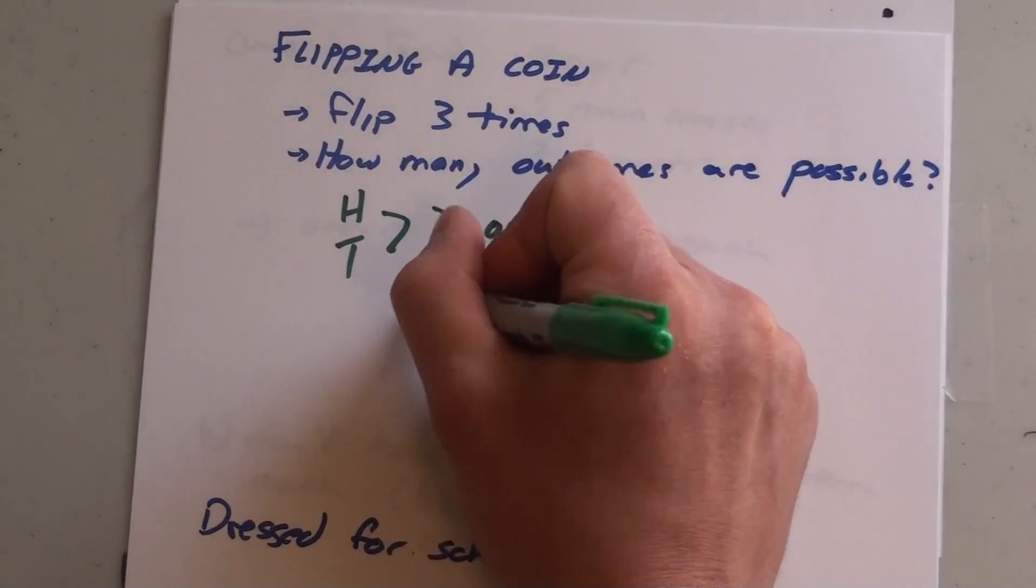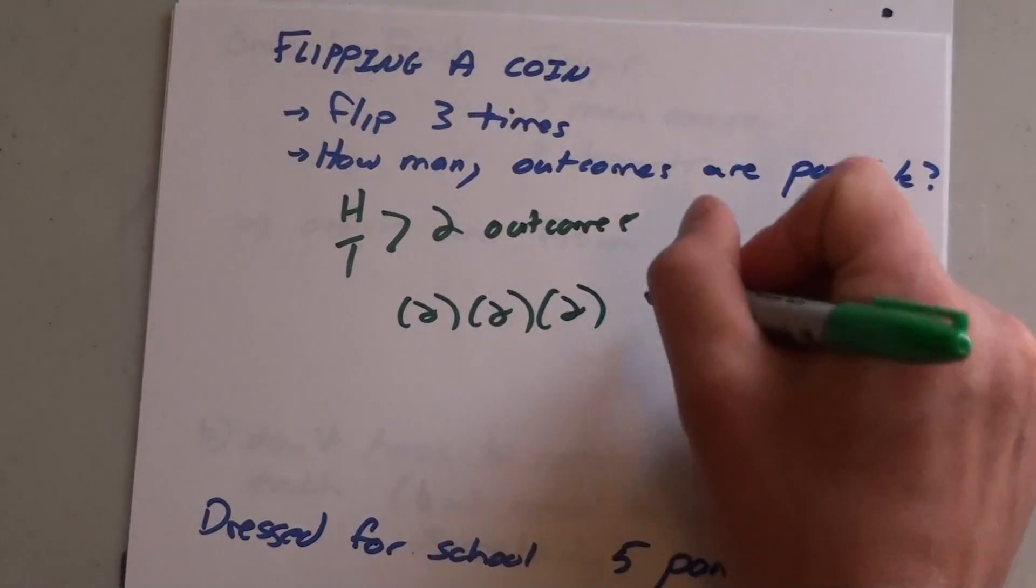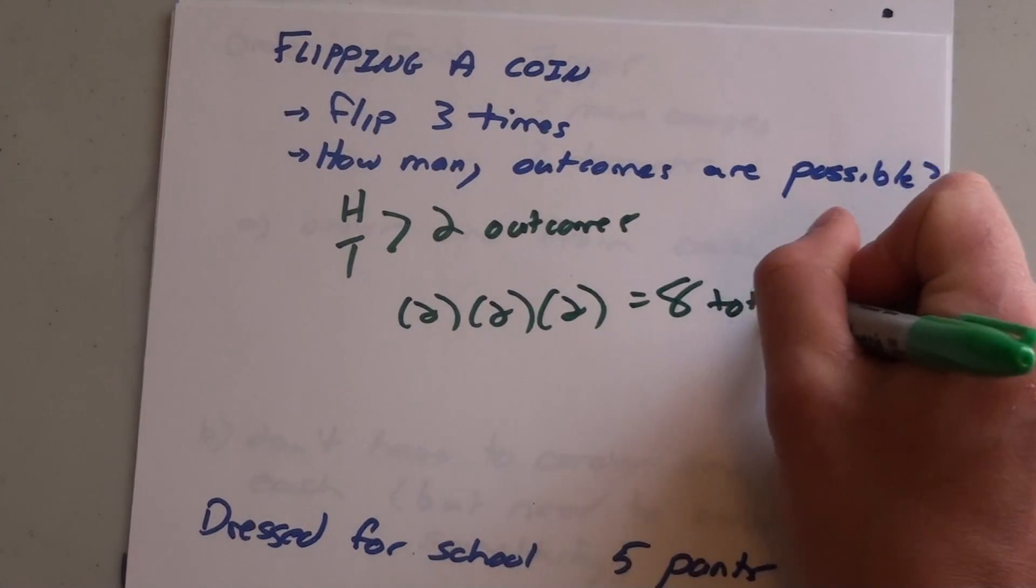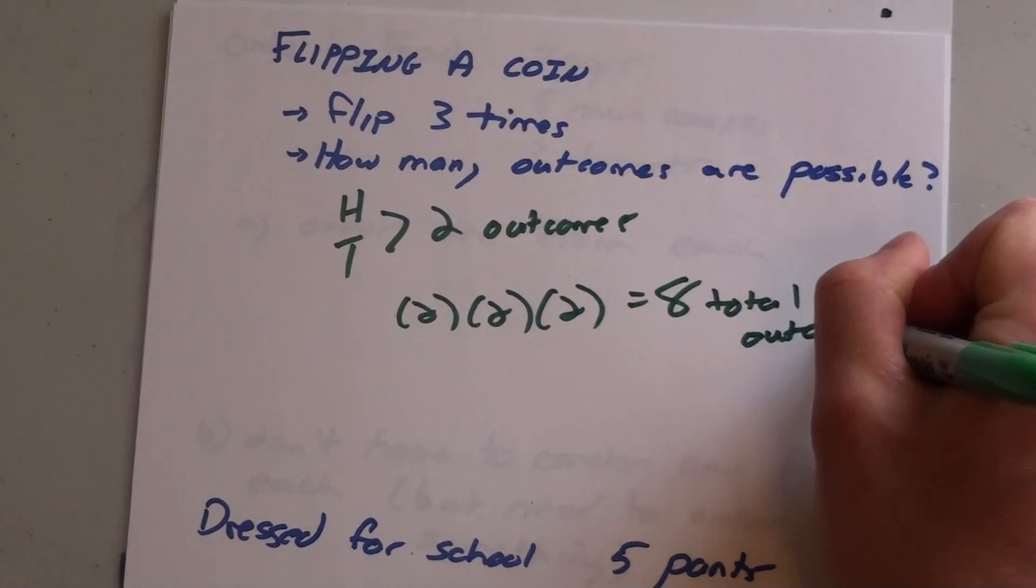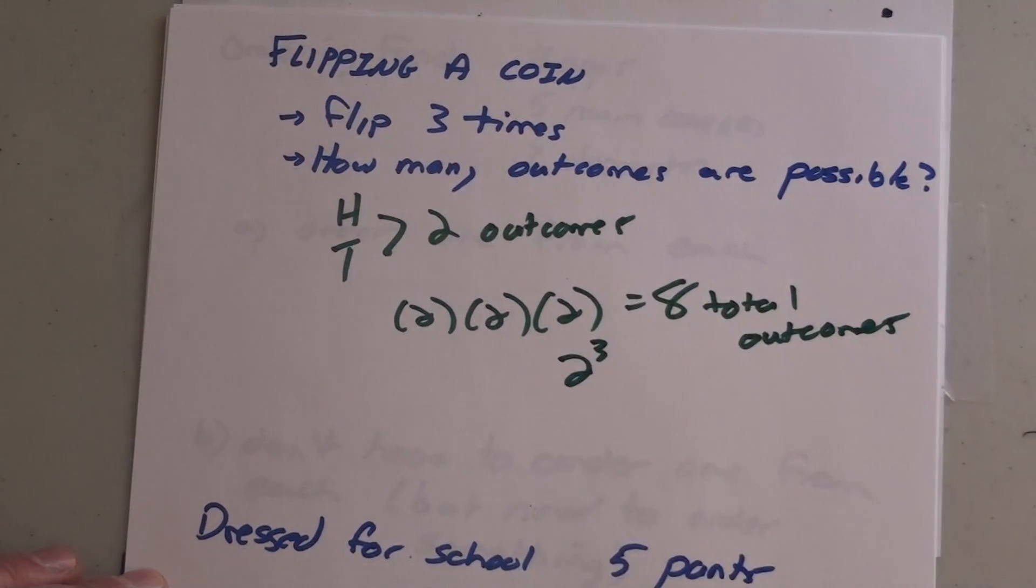If I'm going to flip it three times, I'm going to have two for the first time, then two for the second one, and two for the third one, which is going to give me a total of eight total outcomes. A couple other ways I can answer that question would be two to the exponent three, because I had two but I had three times - two times two times two.